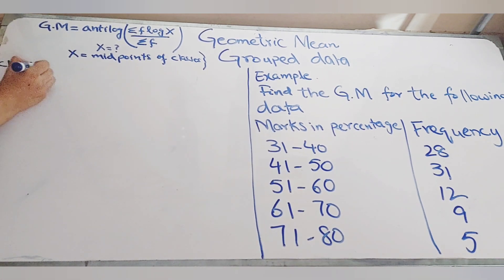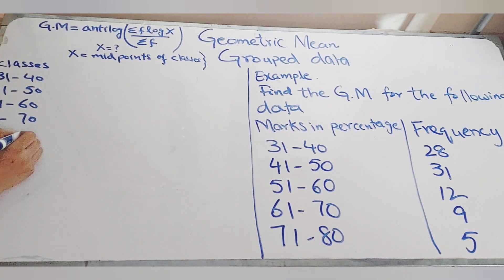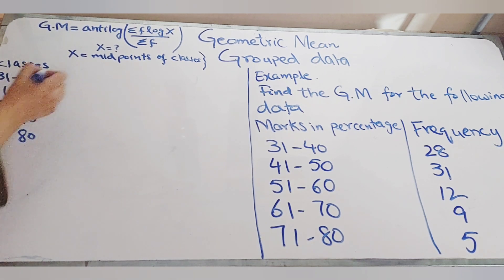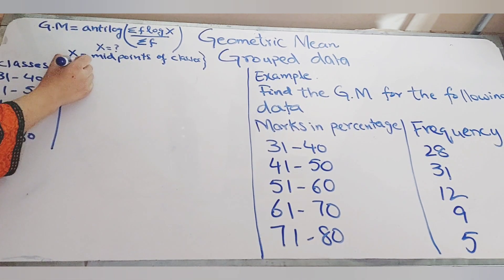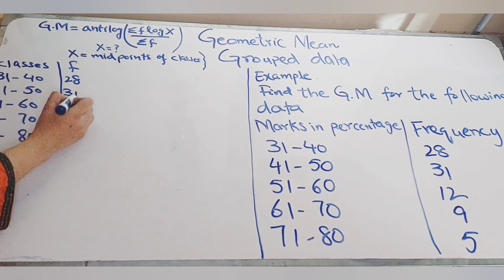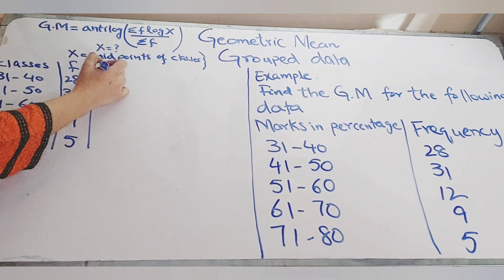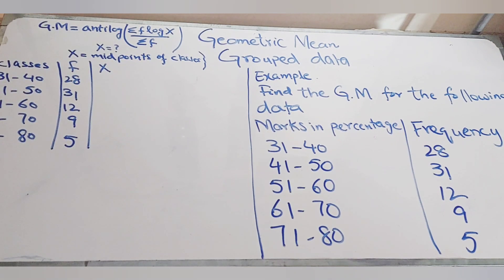Let's begin with the solution. We write the classes and frequencies again. Classes are: 31–40, 41–50, 51–60, 61–70, and 71–80. Their respective frequencies are 28, 31, 12, 9, and 5. Now we will find the midpoints by adding the lower class and upper class limits and dividing by 2.